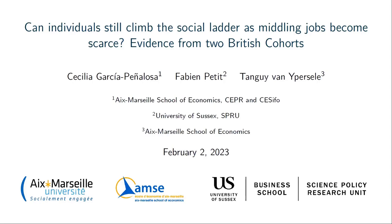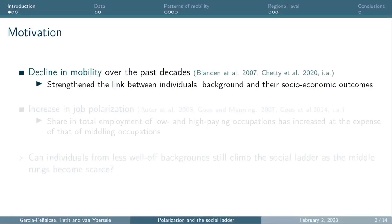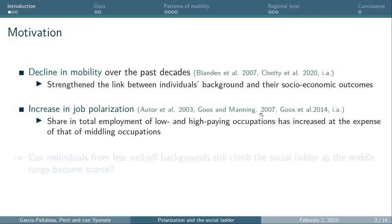Today my talk is about social mobility and the basic link it could have with job polarization. This is joint work with Cecilia Garcia-Penalosa and Tanguy van der Sel from Aix-Marseille School of Economics. The question we ask is basically whether individuals can still climb the social ladder as the middling jobs are becoming scarce. We use British cohort studies to answer this question. There has been a decline in social mobility over the past decades, observed for both the UK and the US, which has strengthened the link between individuals' backgrounds and their socioeconomic outcomes such as the occupations they can get.